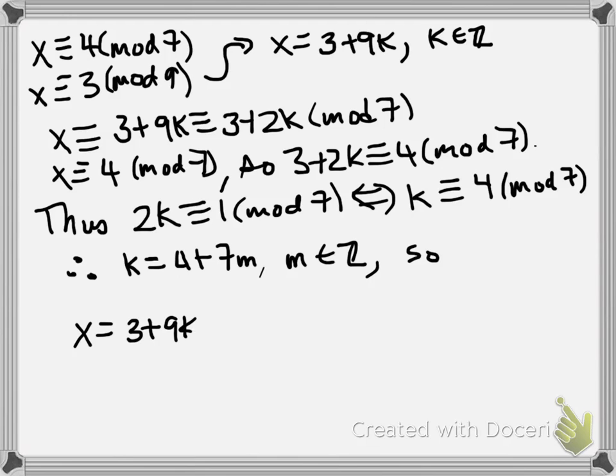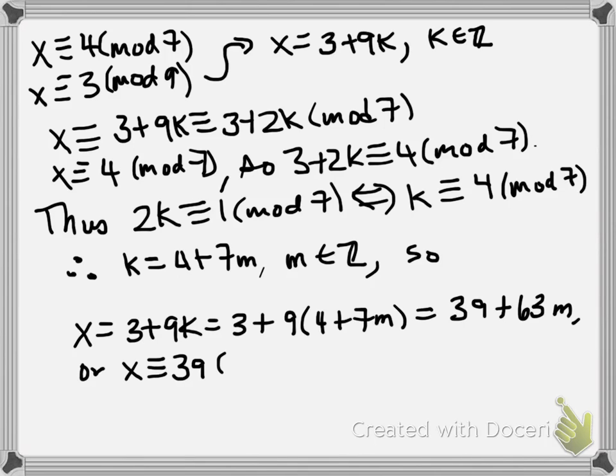In other words, x is equal to 3 plus 9k, where k is 4 plus 7m, so multiplying it out, x is 39 plus 63m. In terms of congruences, x is congruent to 39 mod 63.